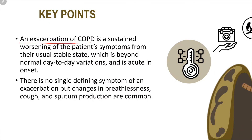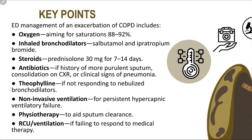The key point of this lecture: any acute exacerbation of COPD is a sustained worsening of patient symptoms from their usual state, beyond normal day-to-day variation, and is acute in onset. There is no single defining feature, but changes in breathlessness, cough, and sputum production are common. The main treatment lines are: oxygen to maintain saturation between 88–92%, inhaled bronchodilators — salbutamol (Ventolin) and ipratropium bromide (Atrovent) — steroids (prednisolone or hydrocortisone), antibiotics if there is purulent sputum or consolidation on chest X-ray, theophylline if not responding to the above, and non-invasive ventilation or ICU referral if all other lines fail.